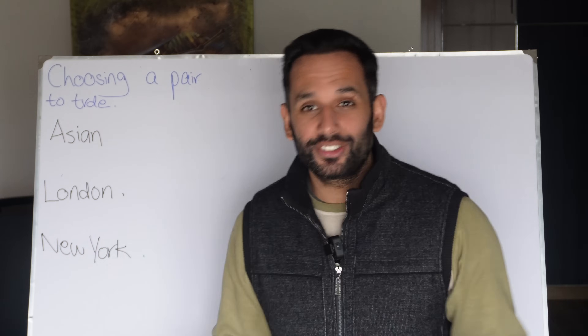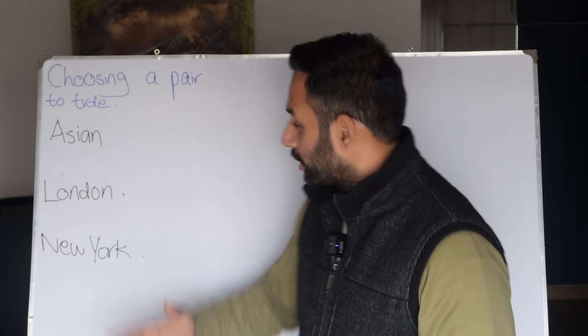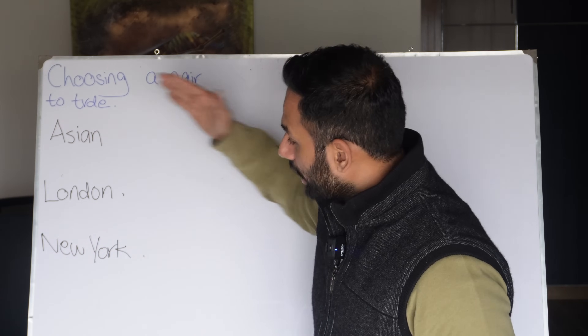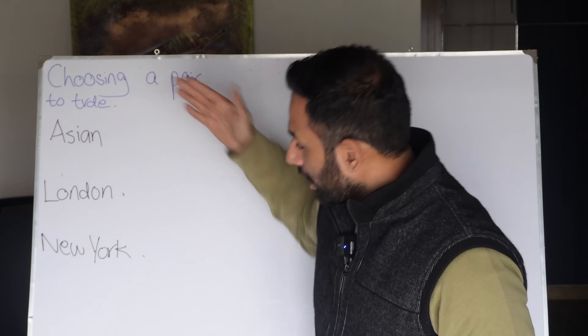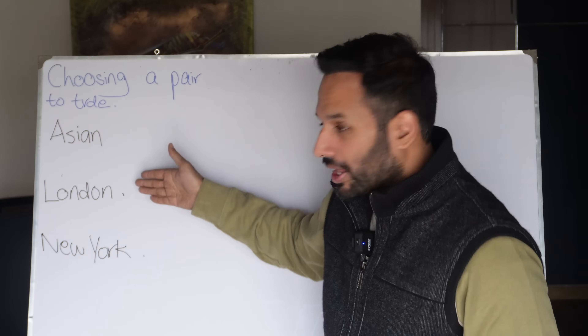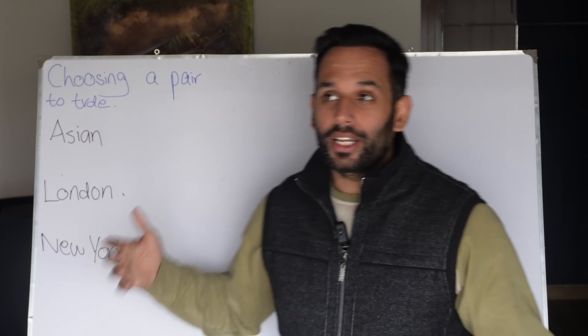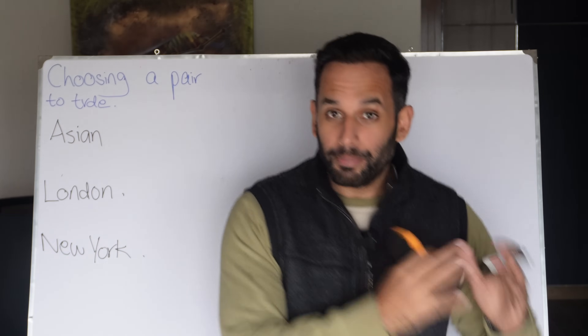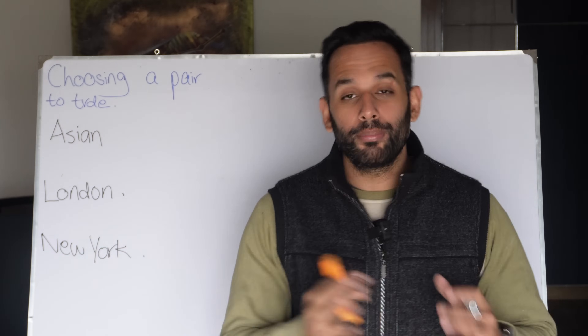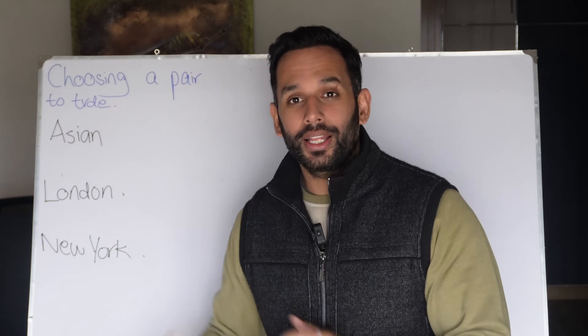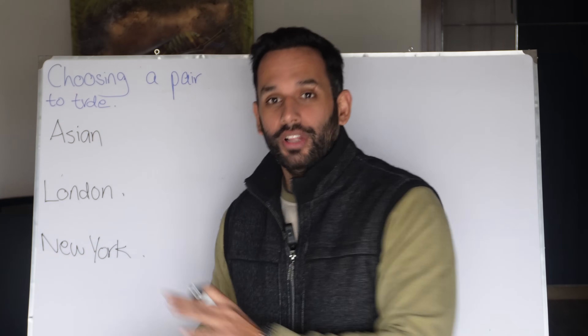Now before we even go into how to choose the currency pair, we've got to identify what sessions we have. So we have the Asian session, London session, and New York session. The next step is to identify that certain pairs are more volatile in certain sessions.